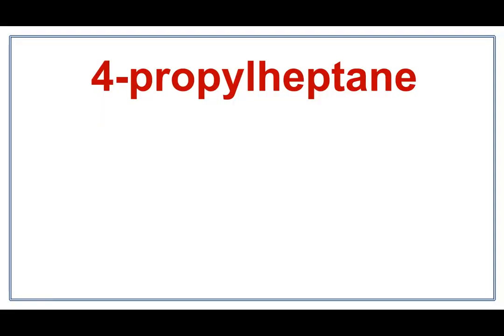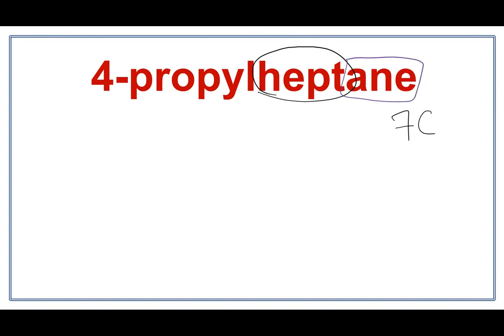Let's draw the structure for 4-propylheptane. 'Hept' tells us that there are 7 carbons in the parent chain. 'Ane' tells us that there are only single bonds between these carbons.